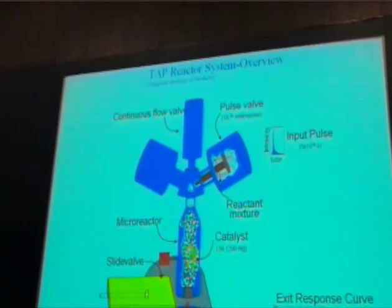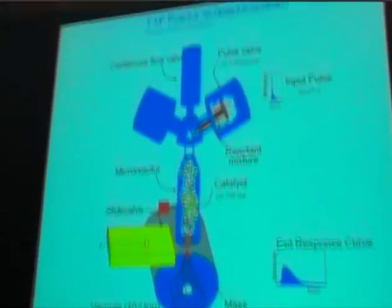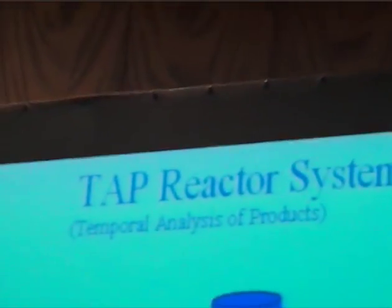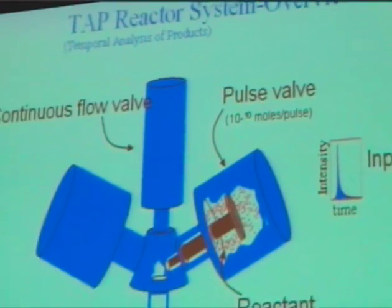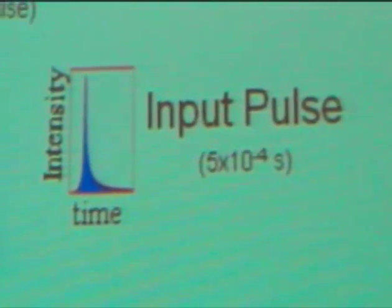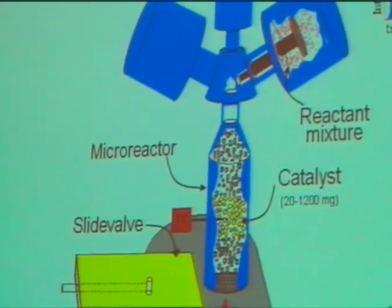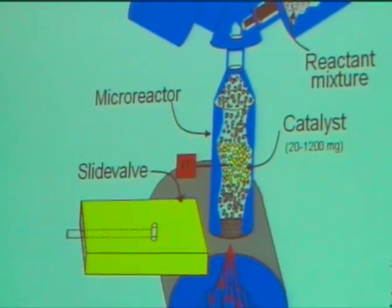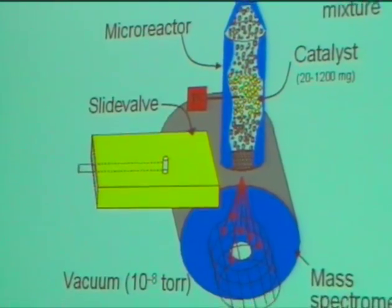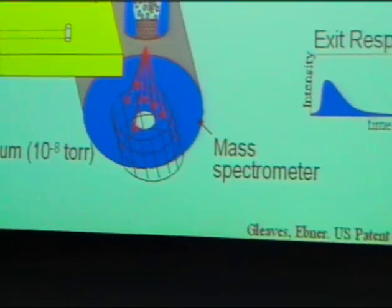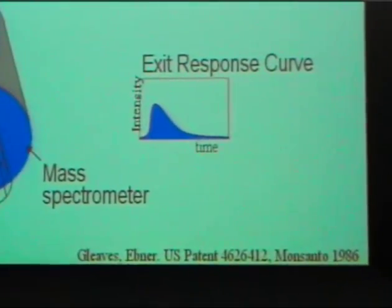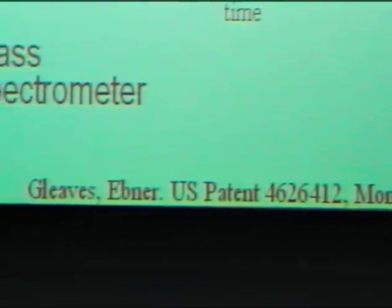So let me just give you a quick briefer on the TAP reactor. It was invented back in the 80s by Dr. Gleaves, and he was back at Monsanto. And it's essentially comprised of three parts. The upper part is a manifold assembly, which has some fast-acting pulse valves. These are similar in idea to the fuel injectors in your car, very fast response times. So on the order of 5 times 10 to the negative 4th second, very quick. Then we have the micro-reactor itself, which is in the middle, and it's heated. And then we have, at the end, we have a vacuum system with a quadrupole mass spectrometer.